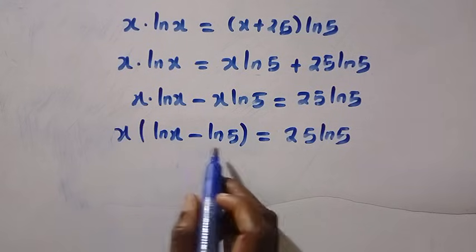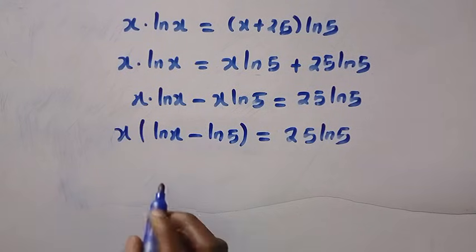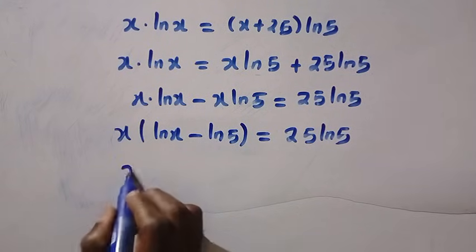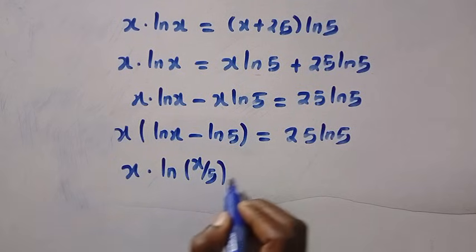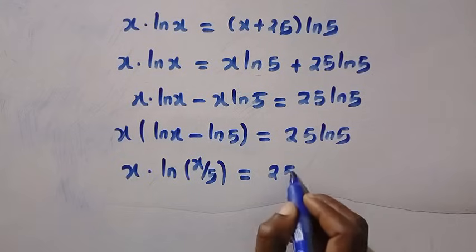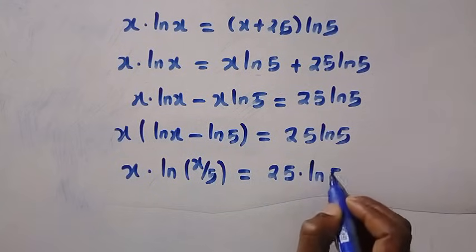And from here we apply the rule of logarithm. This is negative, it changes to division. And we have x multiplied by ln x over 5 in bracket equals 25 multiplied by ln 5.